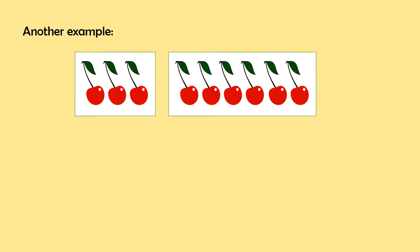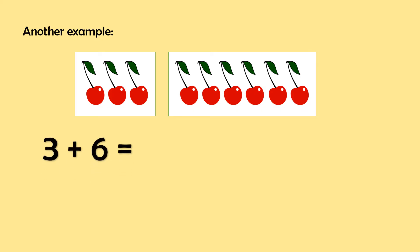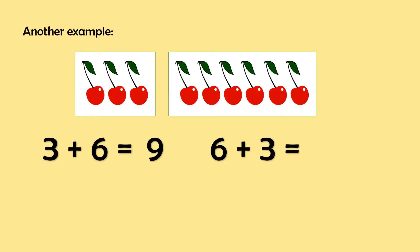Another example: we have 3 cherries and 6 cherries. So, we can write this as 3 plus 6 is equal to 9, or 6 plus 3 is equal to 9 also. And these illustrate the commutative property. So, changing the order does not change the sum.